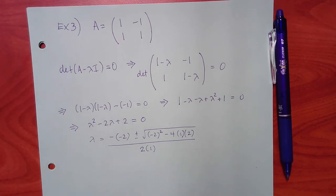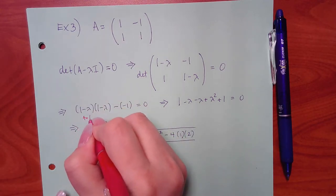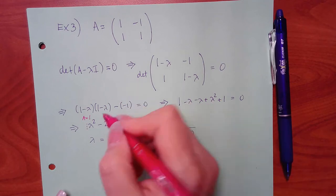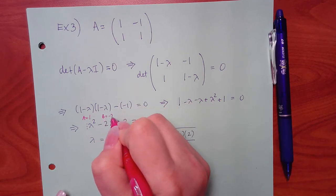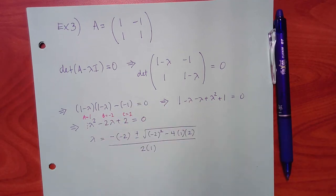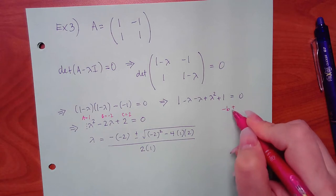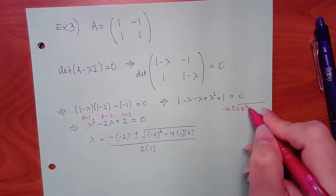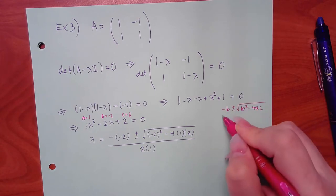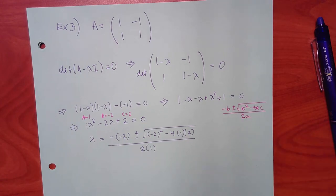We also used the quadratic formula for auxiliary equations in differential equations, so it should be familiar. Plugging in: numerator is 2 plus or minus the square root of 4 minus 8, which is the square root of negative 4, giving plus or minus 2i.